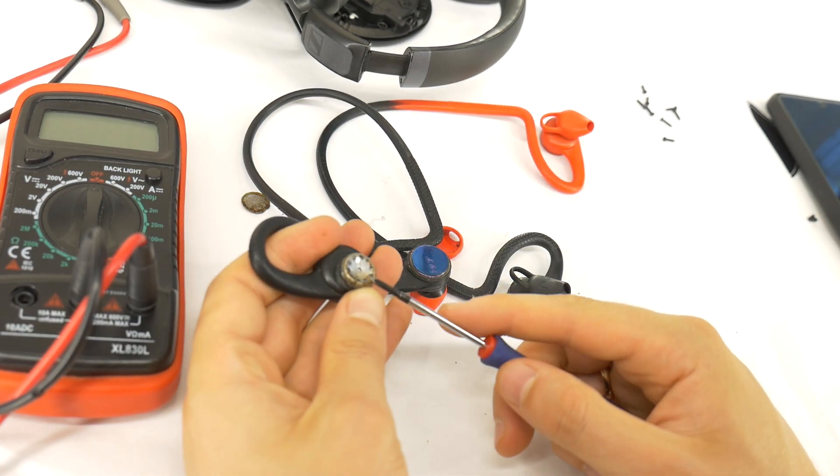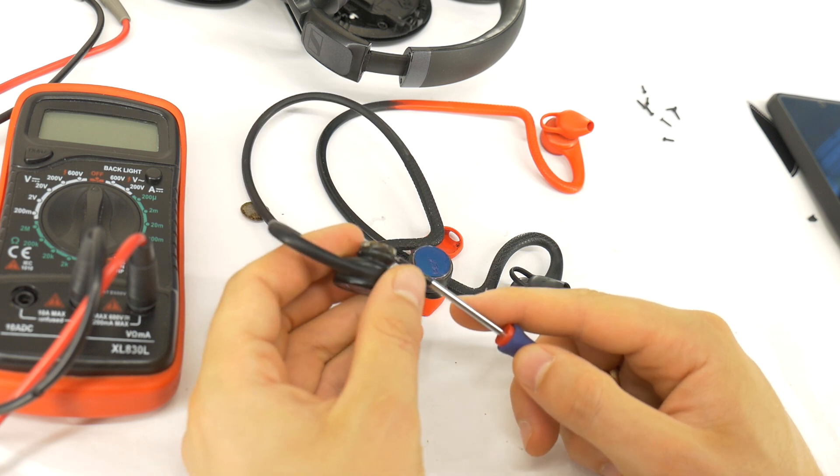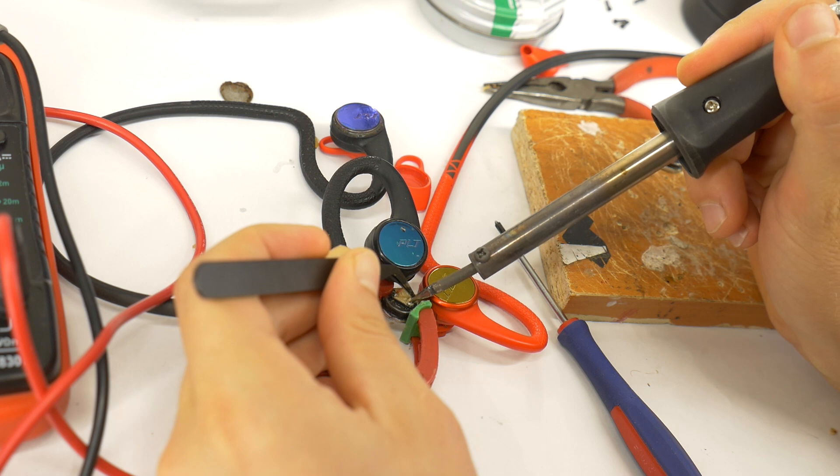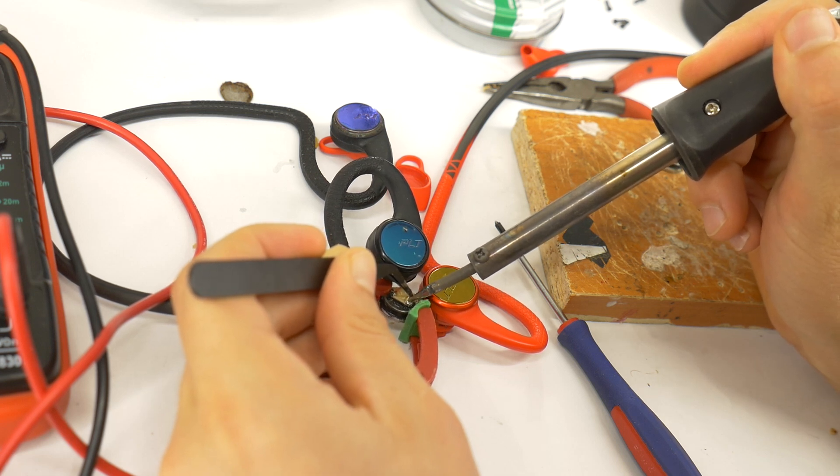The next step is to change the good speaker with the dead one. Unsolder the dead speaker and the good speaker, then solder the good speaker in place of the dead one.